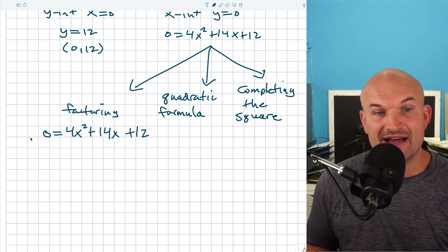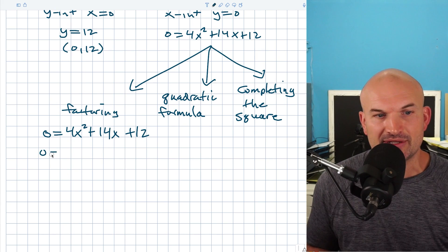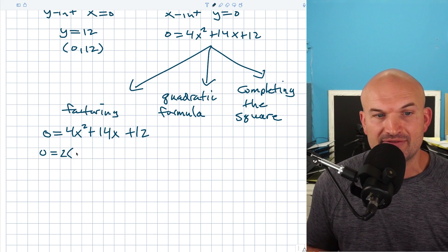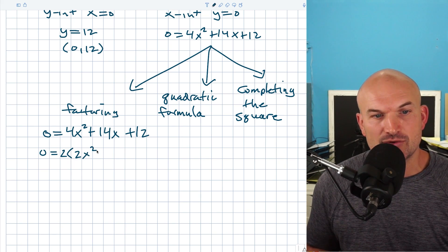Okay, so let's go into how would we factor something like this. The first thing you always want to do is see what can I factor out. What do they have in common? And they have a common factor of two. So if I factor out a common factor of two, I'm now left with 2x² + 7x + 6.